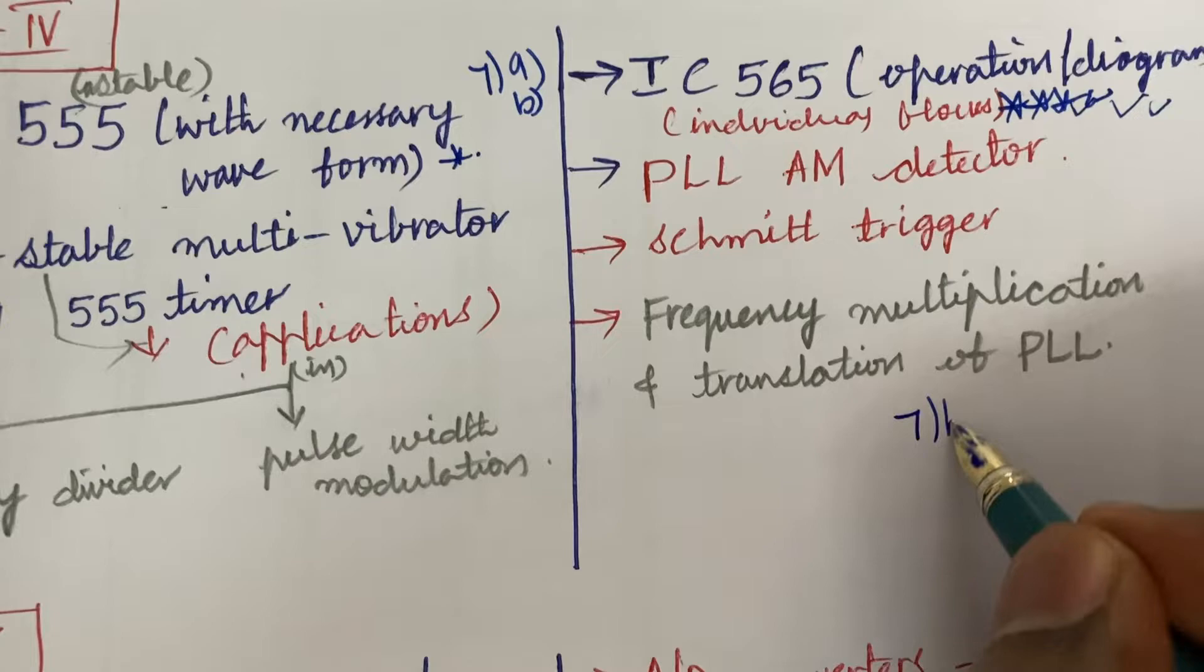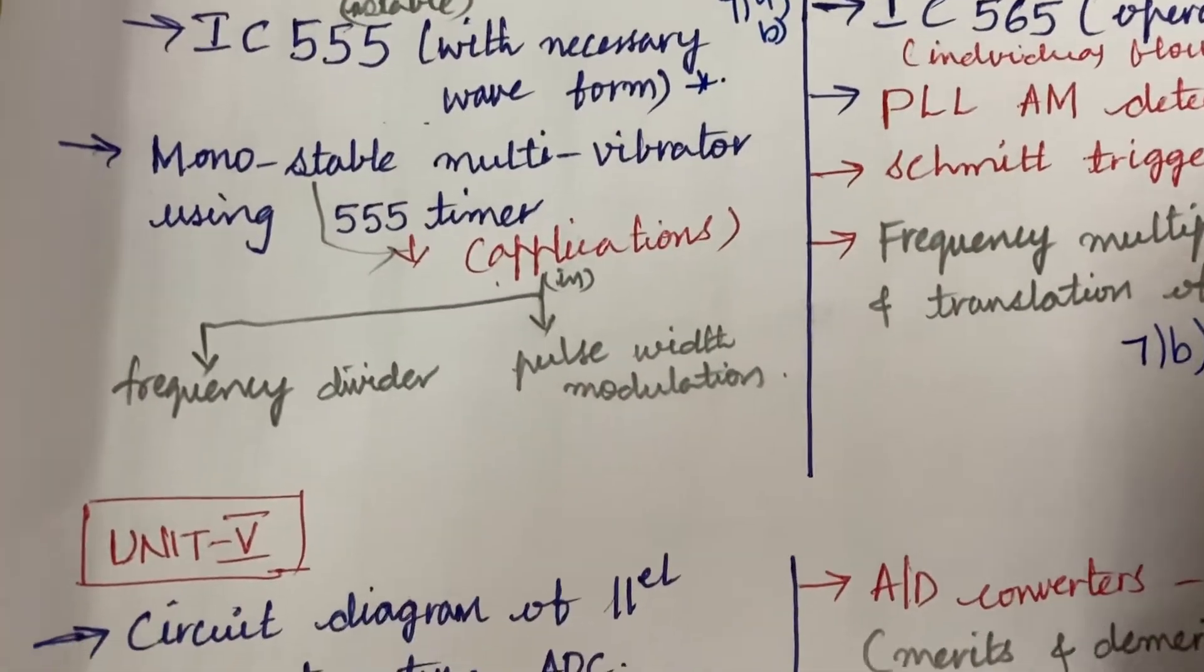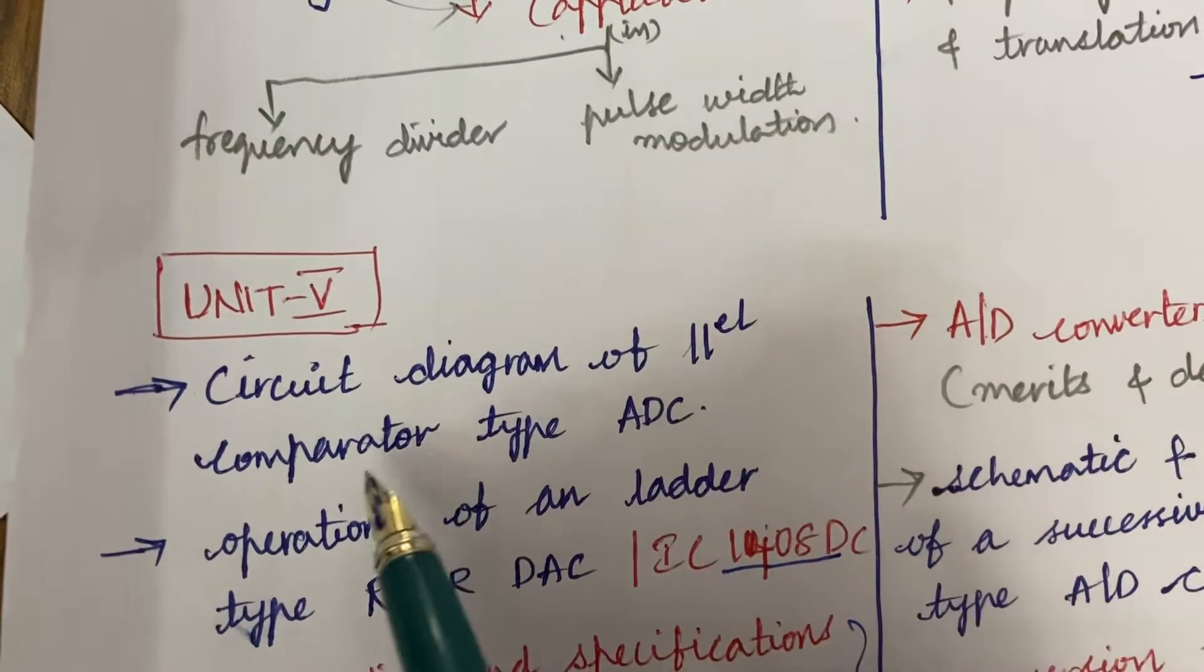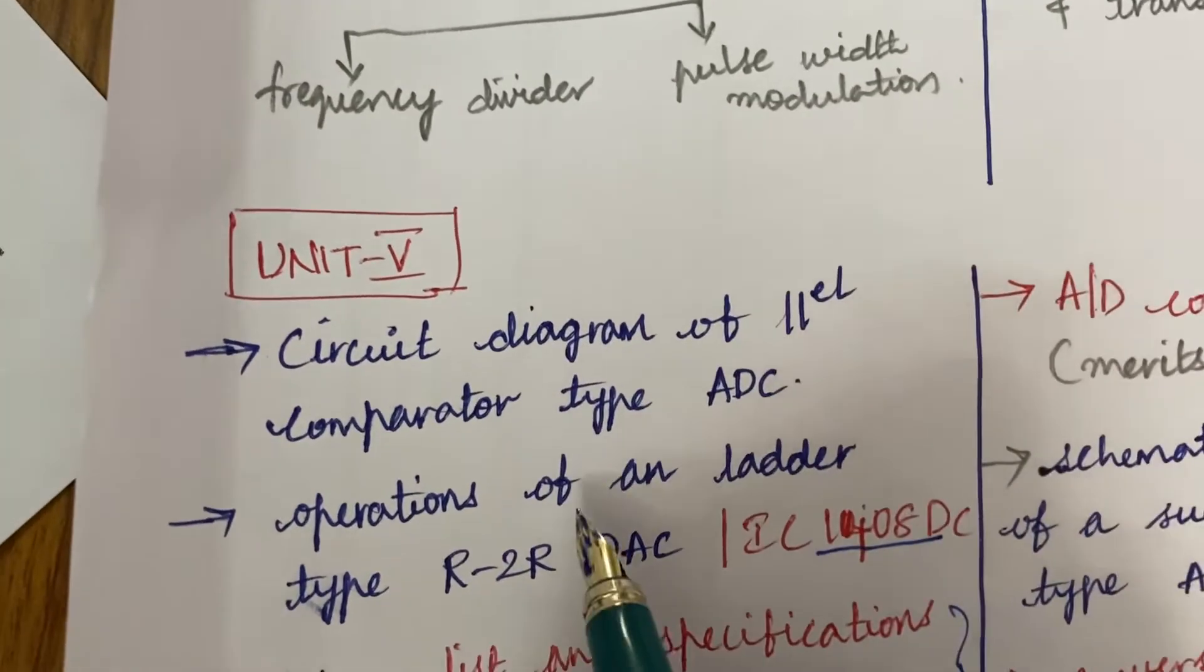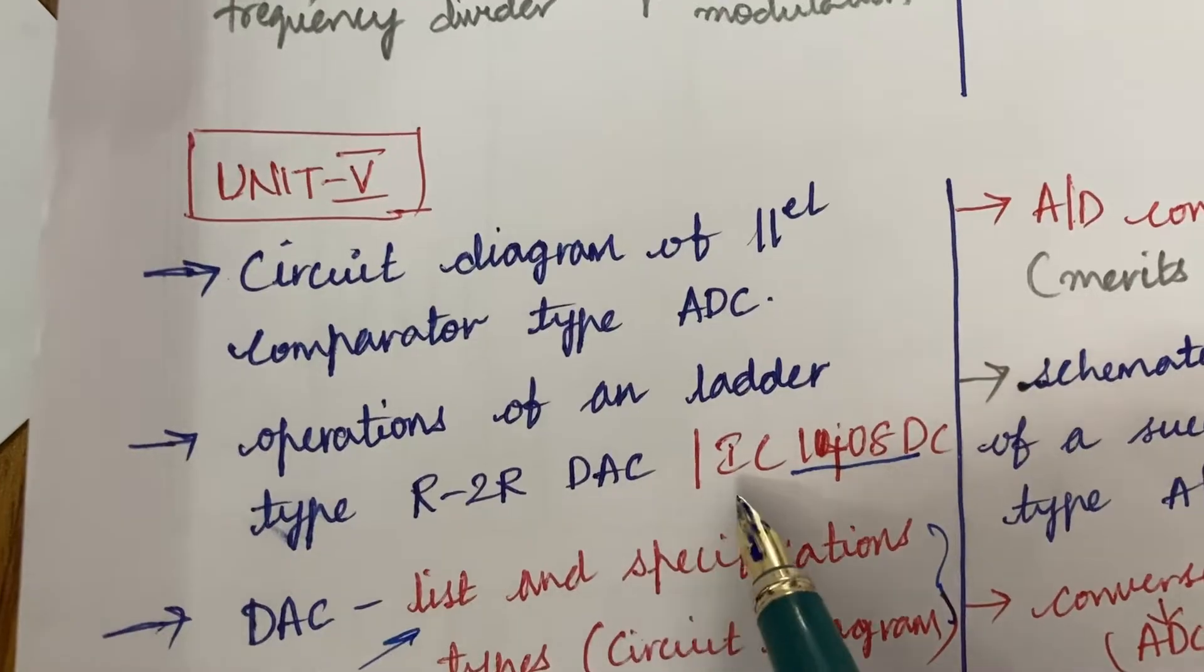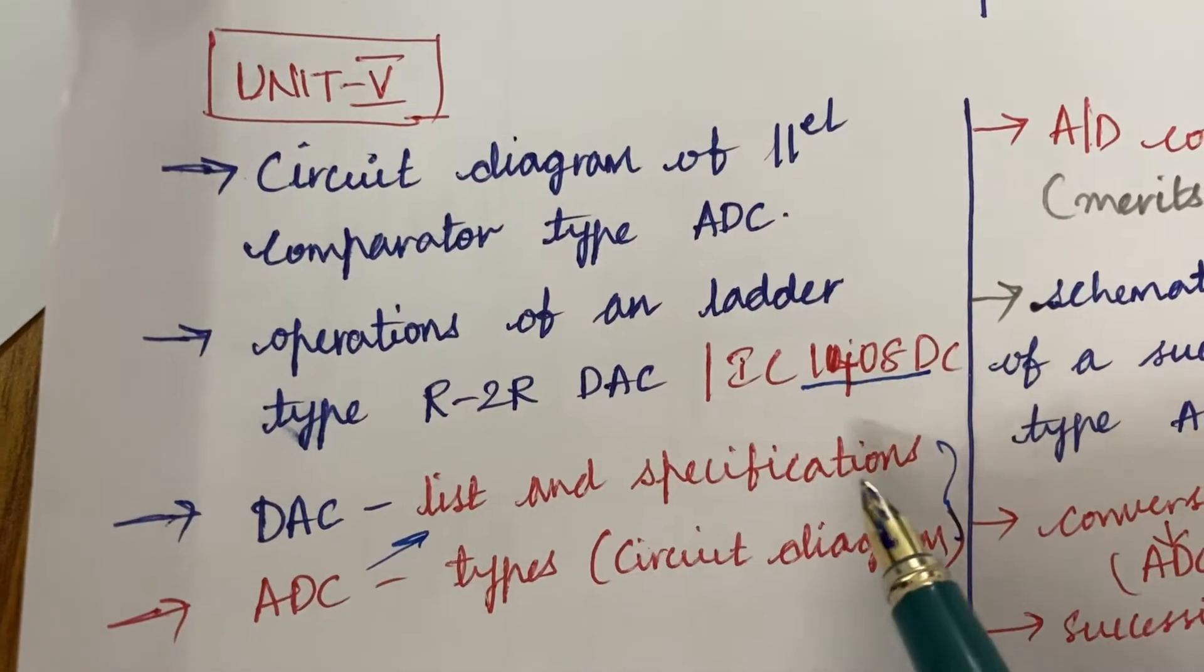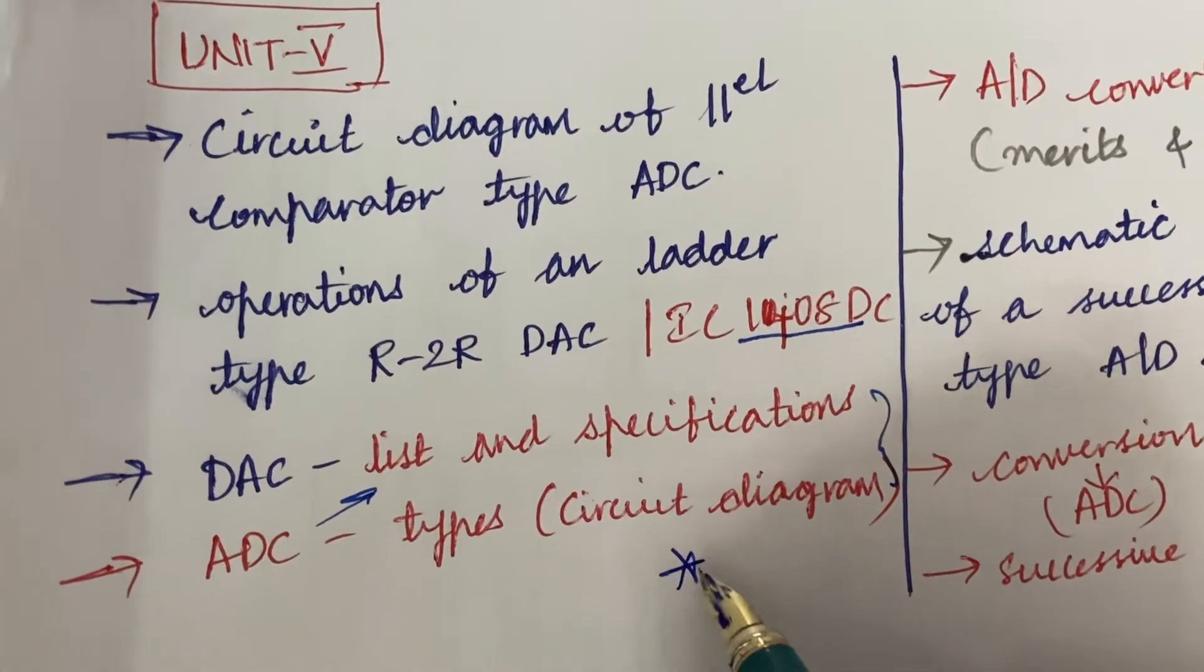From this part you are going to get 7B. Try to work out all the concepts which we have covered later. The eighth question is all about the circuit diagram of parallel comparator type ADC and operations of ladder type R-2R DAC and IC 1408 DC and DAC list and its specifications and ADC types and circuit diagrams.